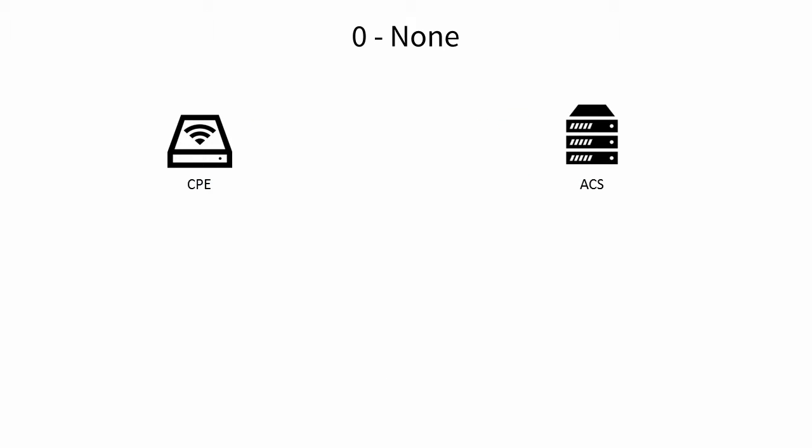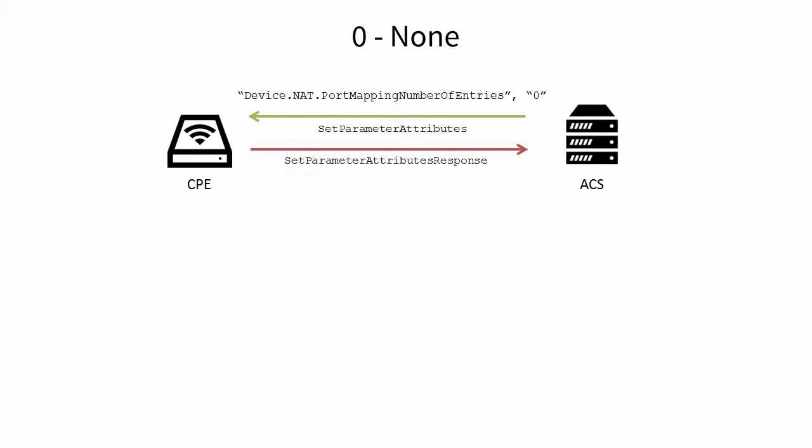Setting a parameter for none, or no notification, removes any previous notification settings. This may be rejected or ignored for parameters that are considered force active. More on that in a moment.